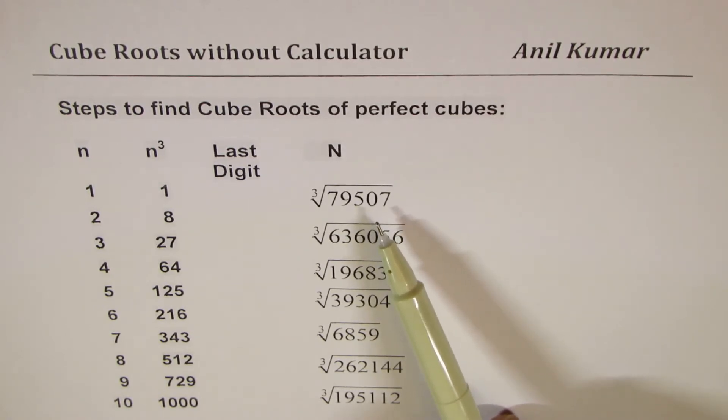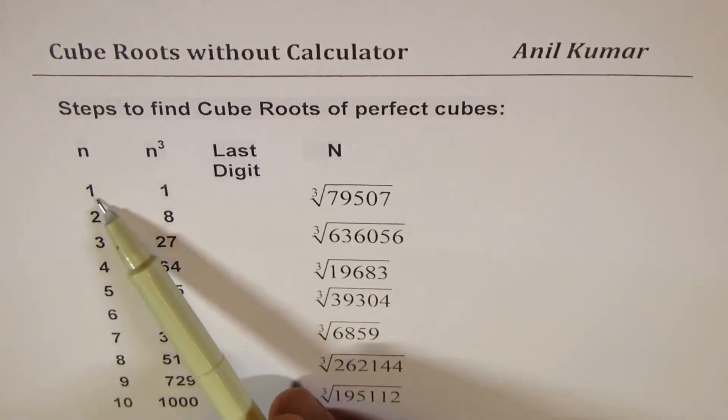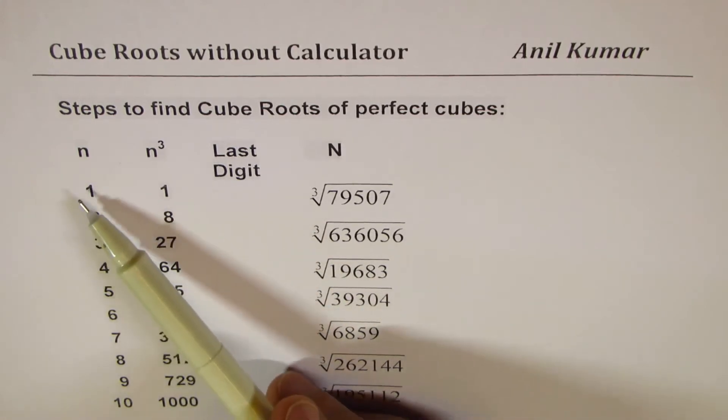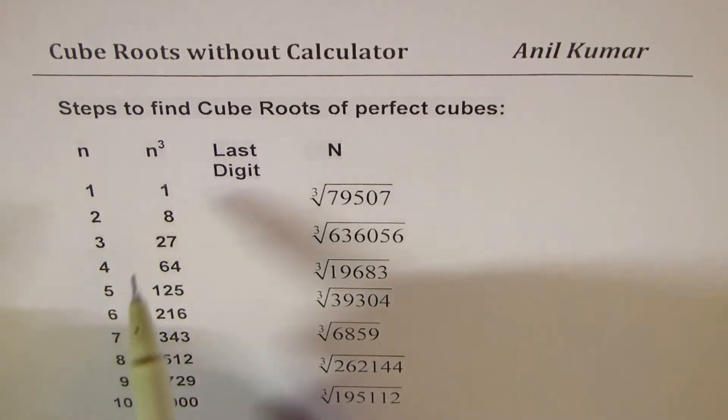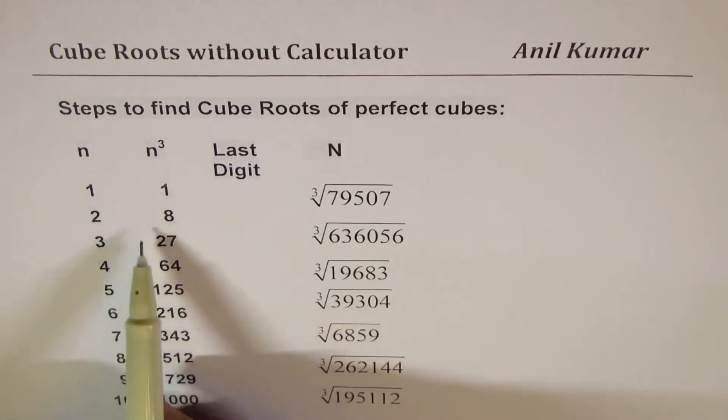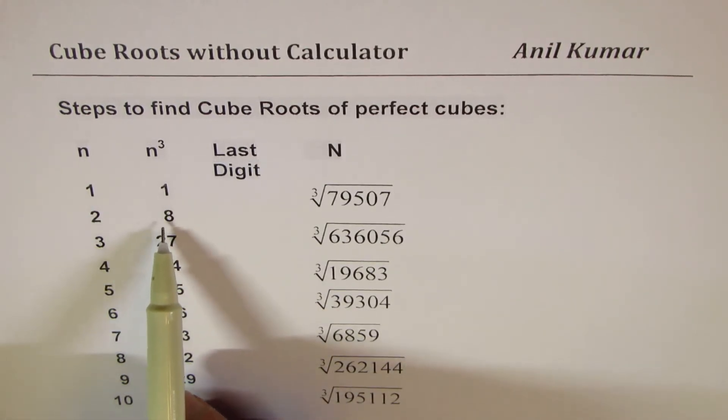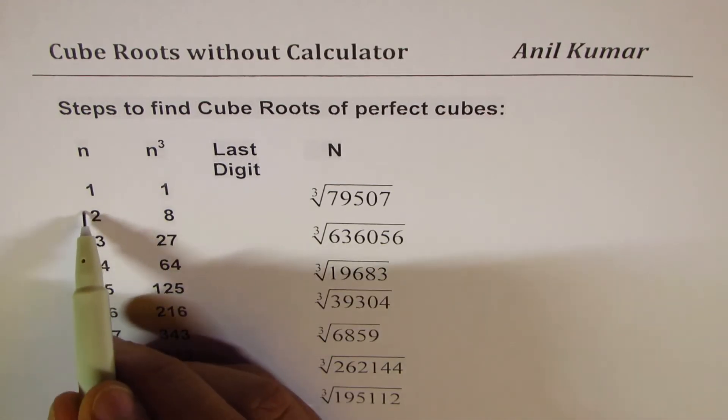Now in this series you can see that most of the last digits are same as the number itself, except for four exceptions. For example, for 2 the last digit is 8.